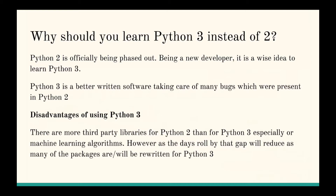Are there any disadvantages to using Python 3? Well, there is one strong disadvantage, and that is there are more third-party libraries for Python 2 today than there are for Python 3, especially in machine learning algorithms. However, as the days roll by, that gap will keep on reducing, because all those algorithms which are not present in Python 3 are being written and will be available in the next several years. By the time you're proficient and ready to use those algorithms, they would potentially be there.